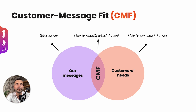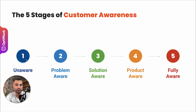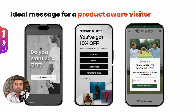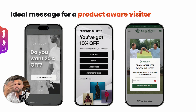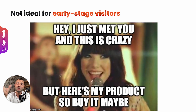Showing the right message to the right people is the challenge, because your customers are different. The most important differentiator is customer awareness — how far along they are in their own customer journey when they visit your website, from being completely unaware of a problem all the way to being fully aware. Let's look at examples of messages that resonate with different awareness stages. For example, if someone is already a product-aware visitor who knows what your product is about and is contemplating buying, then a classic smart discount pop-up is usually a good way to turn them into customers. But this is definitely not the ideal message for all visitors.